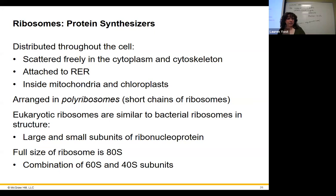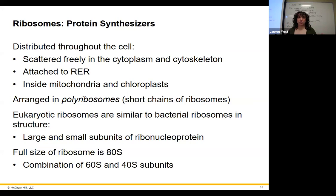Ribosomes make the protein for us and consist of ribosomal RNA. The eukaryotic ribosome is called the 80S — that refers to how much it weighs when spun in a high-speed centrifuge, measured in Svedberg units. Bacteria have 70S ribosomes, and our mitochondria and chloroplasts also have 70S ribosomes, just like bacteria. Archaea have 80S.